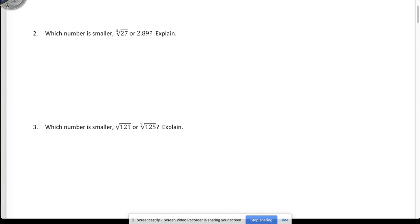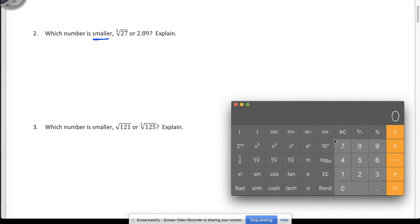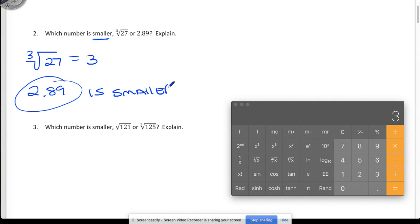We have which number is smaller. Now this one, you really got to read those clue words. Don't think everything's talking about greater. It does flip back and forth between smaller and greater. So we have the cube root of 27 versus 2.89. Let's get our calculator here. We're going to say 27 cube root is 3. So this equals 3. Which one is smaller? This one would be smaller. Let's try the next one.